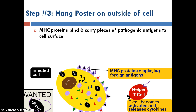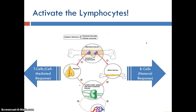The helper T cells then become activated — they notice that MHC and that something's fishy. So they release a chemical called a cytokine, and that opens the floodgates for defense. That activates a lot of different cells in our specific defense response. That cytokine released from the helper T cell is now going to activate all the white blood cells — the lymphocytes. We have B cells that are going to be activated, and we have T cells that will be activated by the cytokines.